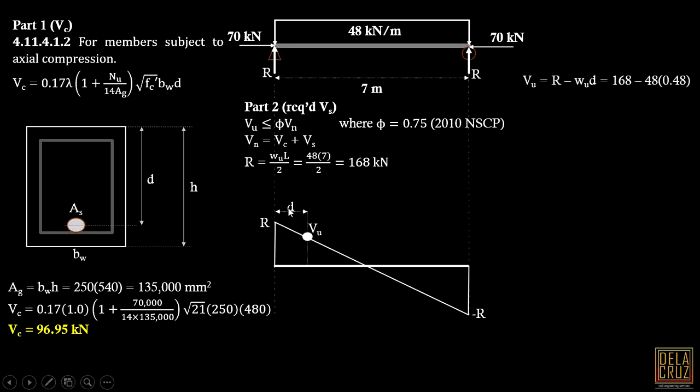In this figure, we can say that Vu equals R minus Wu times d, the effective depth. We'll get Vu from that. That is 168 minus 48, this is the w, times effective depth which is 480 millimeters. So consistent with units, we use meters. So Vu is 144.96 kilonewtons. Now following this equation, before that, let's check Vc first if stirrups are really needed.